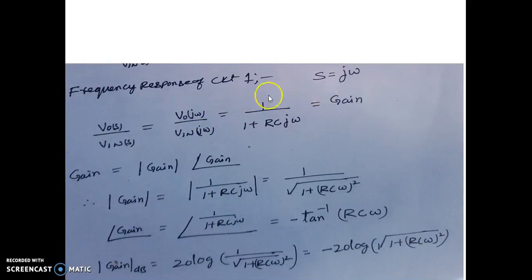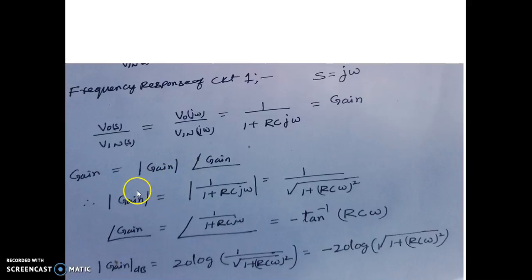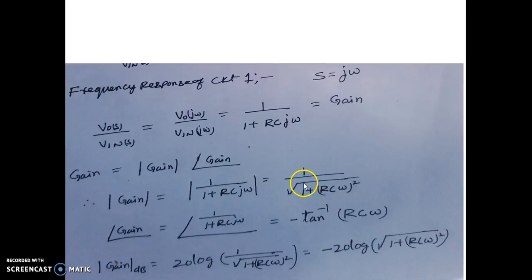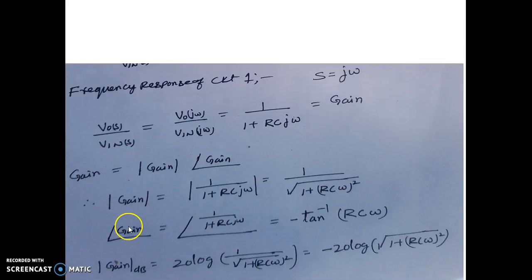It was 1/(1 + RCS); replacing S by jω gives 1/(1 + jRCω). This is a gain expression — a transfer function — which can be expressed as both magnitude and phase. Taking only the magnitude, which is 1/(1 + jRCω), the magnitude is 1 over the square root of (1 + (RCω)²). Similarly, the phase of the gain is given by the phase angle, which is tan⁻¹ of imaginary over real.